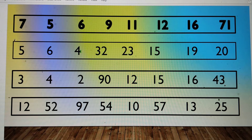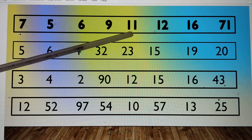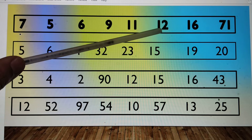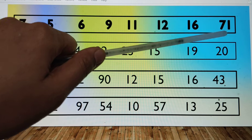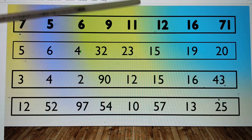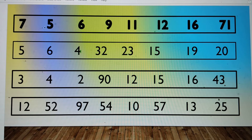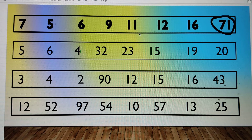In the next series, we have number 7, number 5, number 6, number 9, number 11, number 12, number 16, number 17. There are 4 double digit numbers, but we also have to look at number 71, which starts with number 7. The rest of the numbers start with 1, so 71 is the biggest number here. We will circle this number.